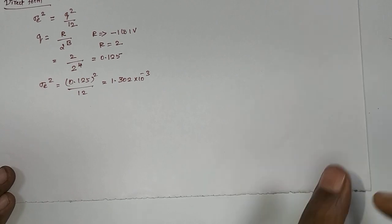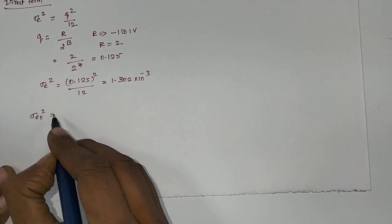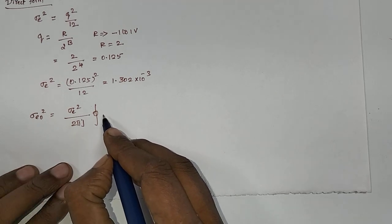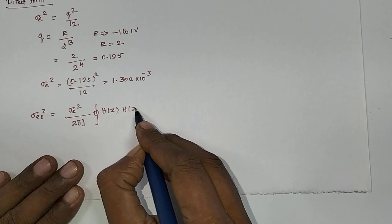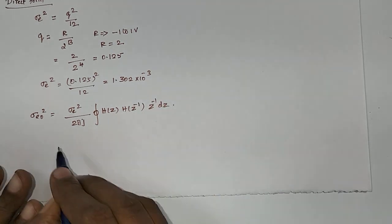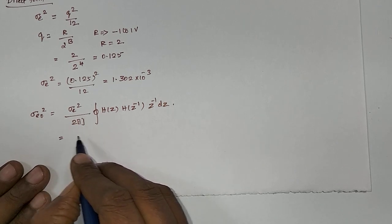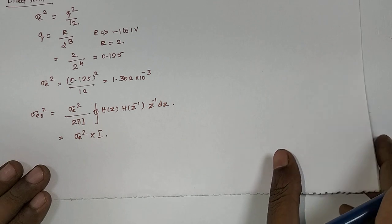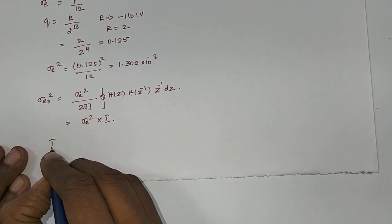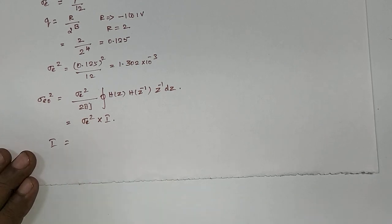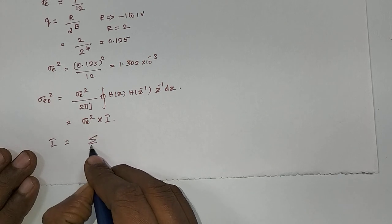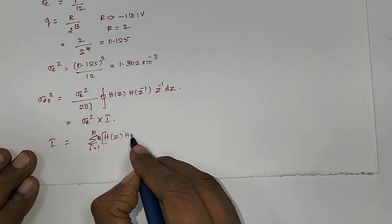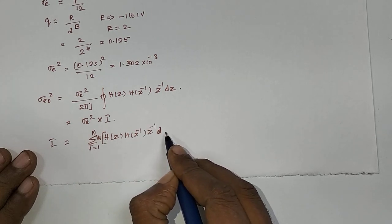Next, the relation to find the output noise variance of the system is: sigma eo squared equals sigma e squared divided by 2πj times the contour integral of H(z) H(z⁻¹) z⁻¹ dz around the unit circle. I am going to use the variable I for this integral function. To find I by residuals: I equals the summation from 1 to N of the residuals of H(z) H(z⁻¹) z⁻¹.